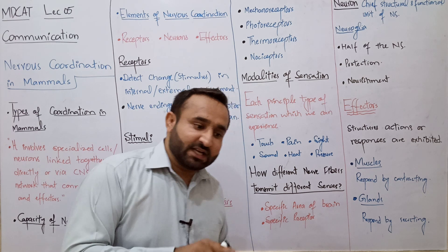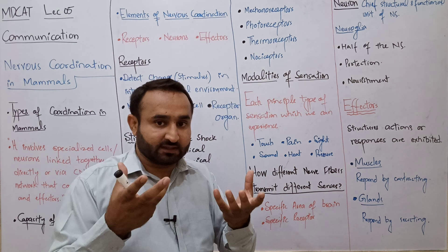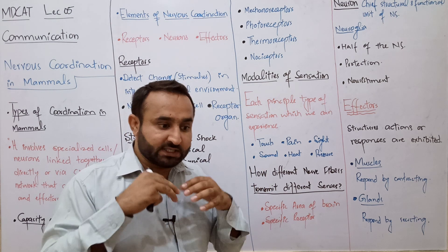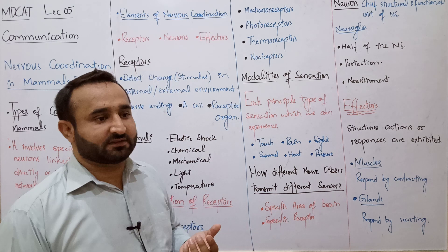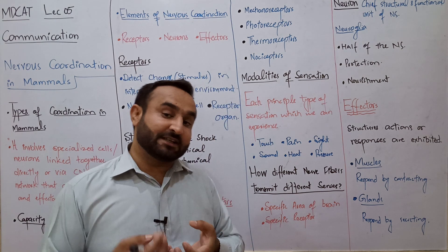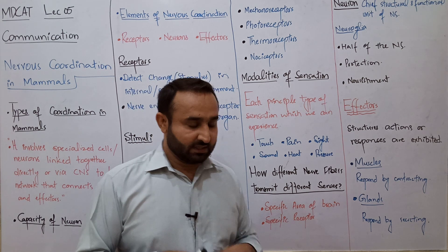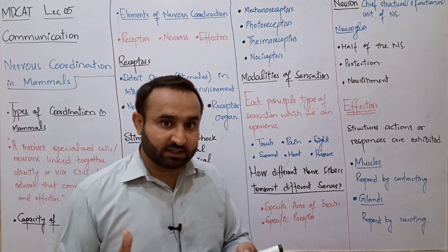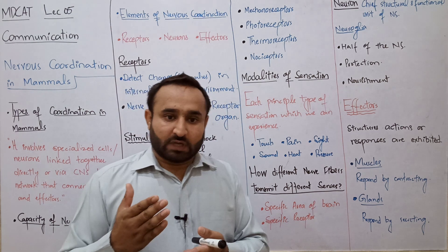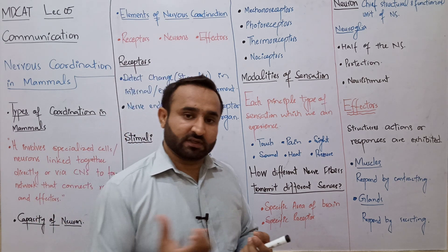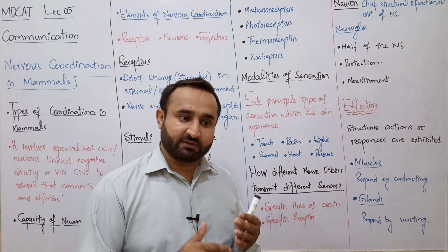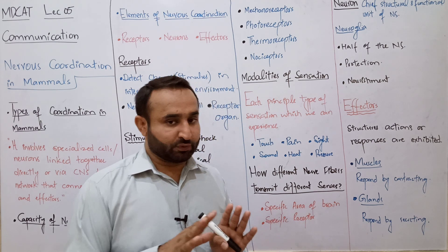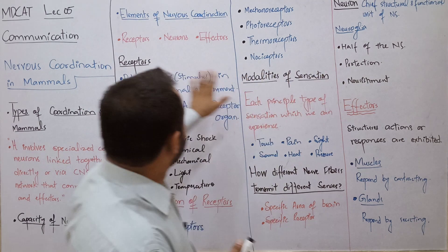دوسری وجہ — ہر طرح کے stimulus کے لیے الگ structure ہے: دیکھنے کے لیے آنکھیں، سننے کے لیے کان، چکھنے کے لیے taste buds، سونگھنے کے لیے olfactory structures۔ ان دو وجوہات سے ہمیں different modalities of sensation مختلف طریقوں سے feel ہوتی ہیں، جبکہ message (nerve impulse) ایک جیسا ہے — جیسے mobile پر radiation ایک جیسی ہوتی ہے مگر caller number سے پتا چلتا ہے کون ہے۔